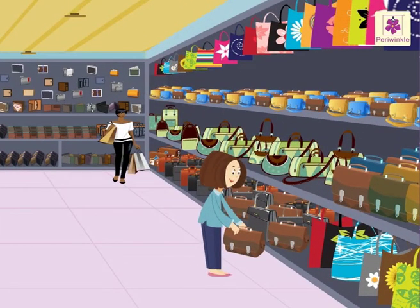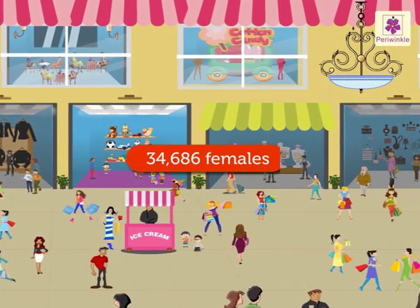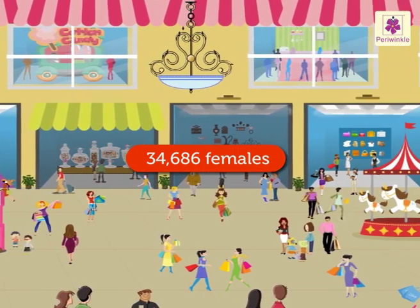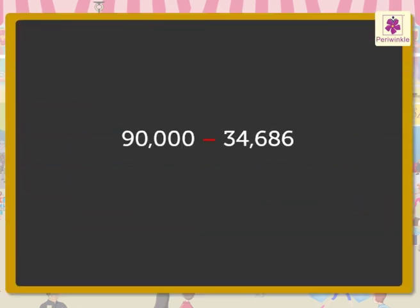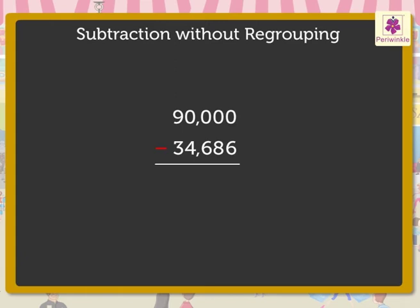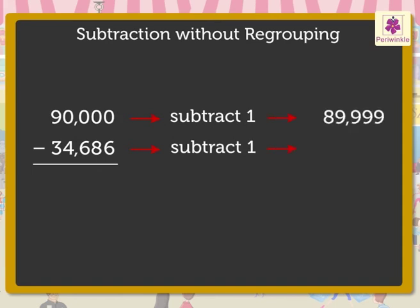They are so attractive. Today, ninety thousand people have come to the mall, out of which thirty-four thousand six hundred eighty-six are females. Let us find out how many males have come today. We have to subtract thirty-four thousand six hundred eighty-six from ninety thousand. But here, we would be subtracting without regrouping. To find the difference without regrouping, we will first reduce both the minuend and subtrahend by one and then subtract. So we get the numbers eighty-nine thousand nine hundred ninety-nine and thirty-four thousand six hundred eighty-five.